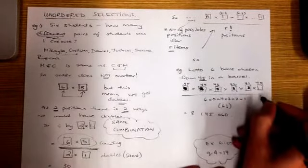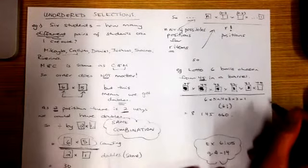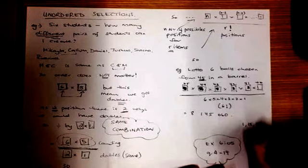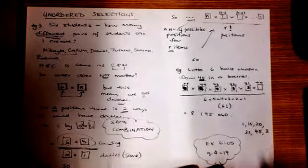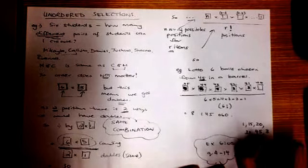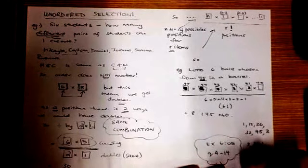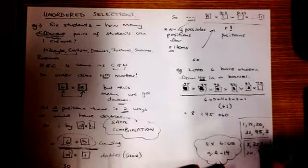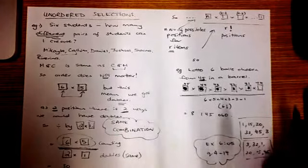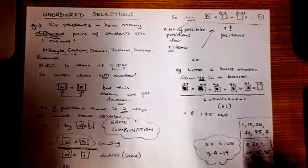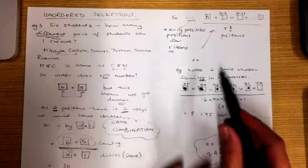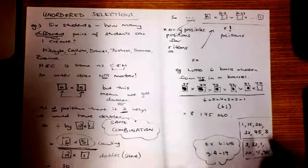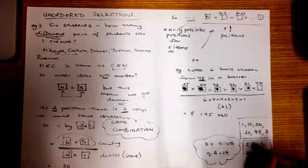There will be a whole lot of doubles. So I might have the numbers 1, 15, 20, 32, 45 and 3 — those are my six numbers. But if I was to choose 3, then 32, then 1, then 20, then 15 and lastly 45, they're still the same set of lotto numbers — still a winner. So what I need to do is work out how many positions I've got, because the number of positions tells me how many doubles — how many of the same combination — I will have. With lotto, I only want to know the different combinations; I don't want to count those that are the same, because order doesn't matter.